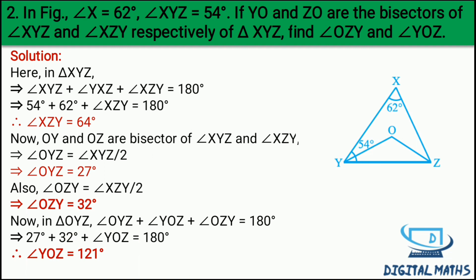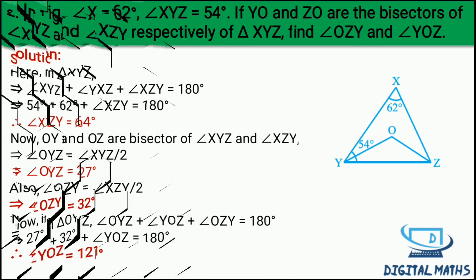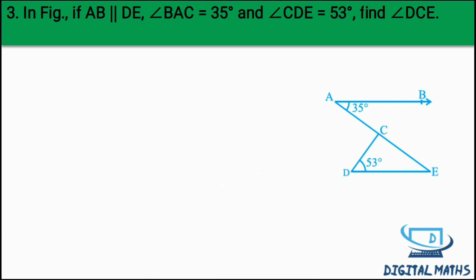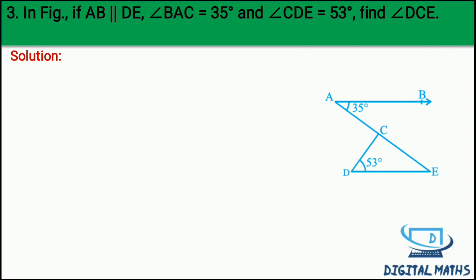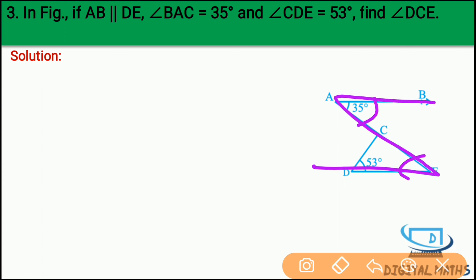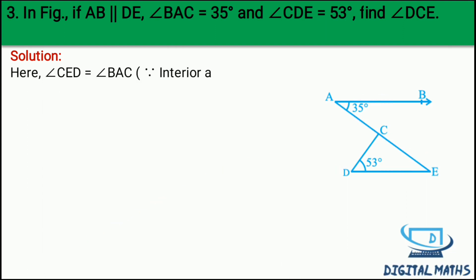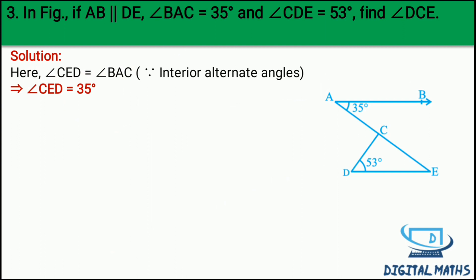Question 3: In the figure, AB is parallel to DE, angle BAC = 35 degree, angle CDE = 53 degree. Find angle DCE. Ab agar AB parallel to DE hai to aapko angle CEZ dekho - yeh wala angle aur yeh wala angle equal honge. Yeh agar 35 hai to yeh wala bhi 35 - alternate interior angles. So angle CED = angle BAC = 35 degree since interior alternate angles.